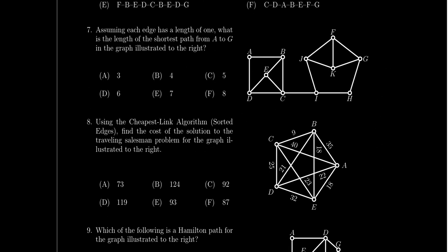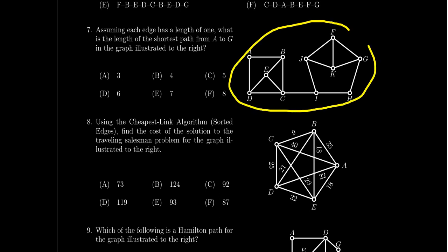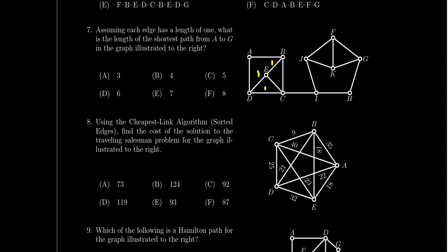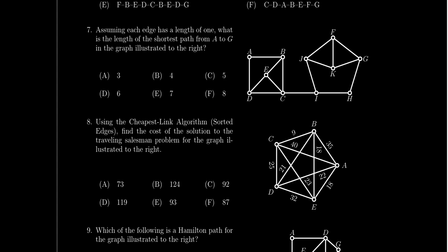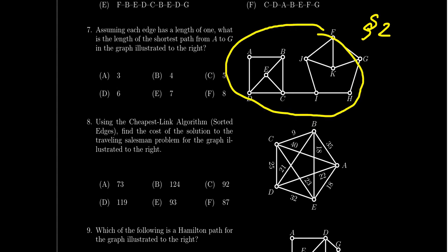Question number seven is about shortest path on an unweighted graph. You could run Dijkstra's algorithm — treating each edge weight as one — but since there are no weights, you may be able to solve it more directly. The graph may have a bridge you'll have to use. The question asks for the length of the shortest path, not the path itself. Dijkstra's algorithm and shortest path were introduced in lesson two.